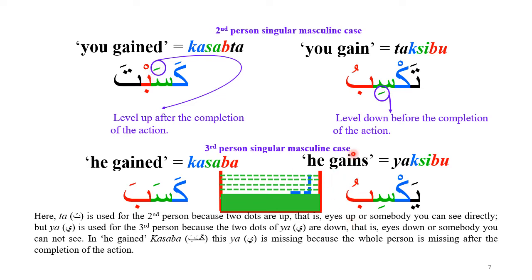Similarly, when the dots are up on Ta it means 'you,' but when the dots are down it means someone you cannot see, such as 'he' — 'Yaqsibu.' And 'Kasaba' is the normal trilateral root.